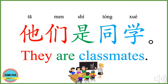他们是同学。 他们 means they. 是 here means are. 同学 means classmate. 他们是同学 means they are classmates. Now your turn.